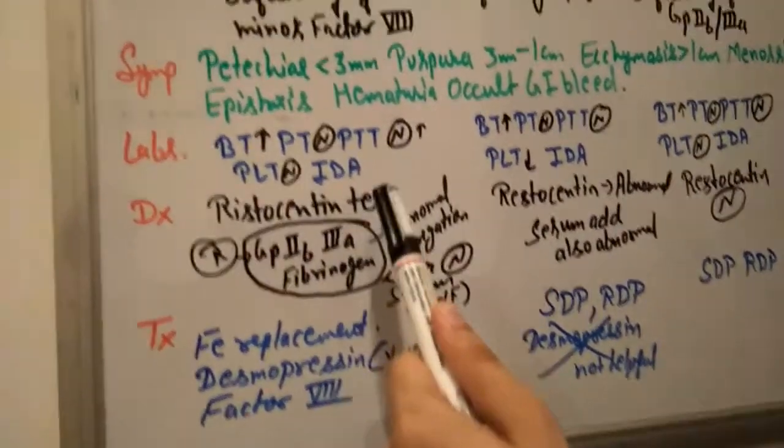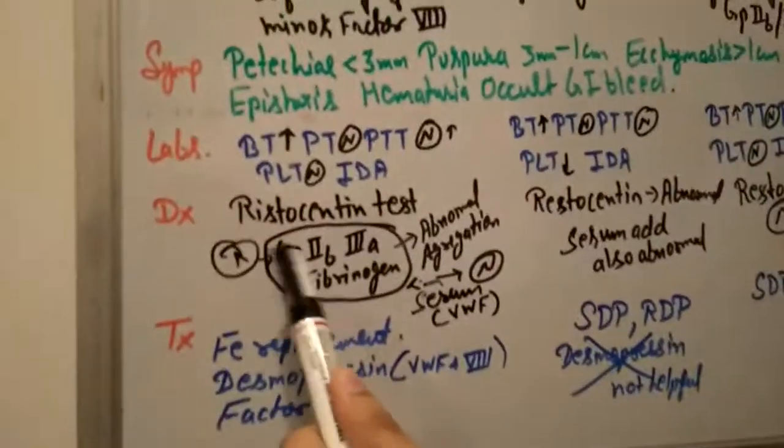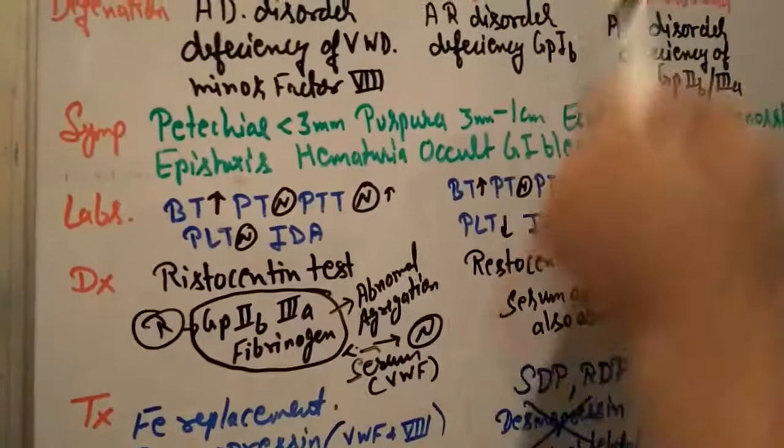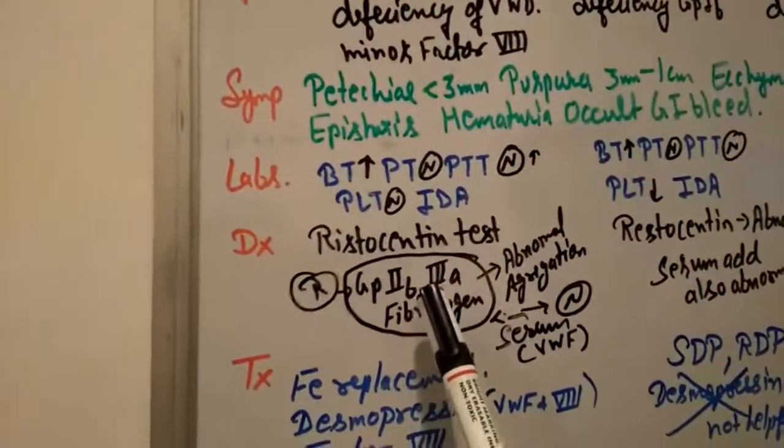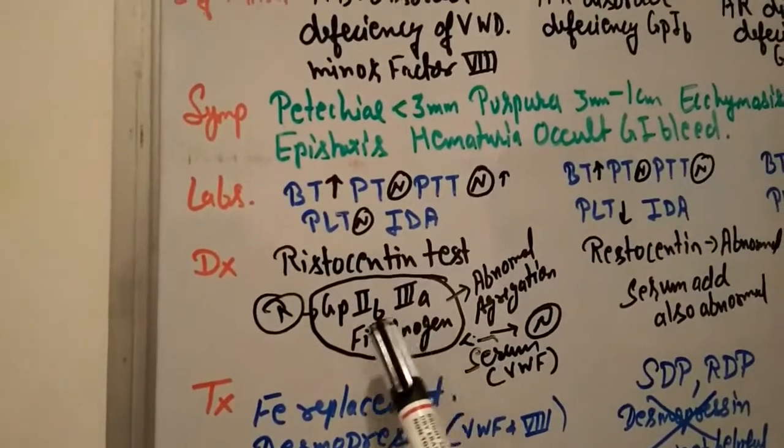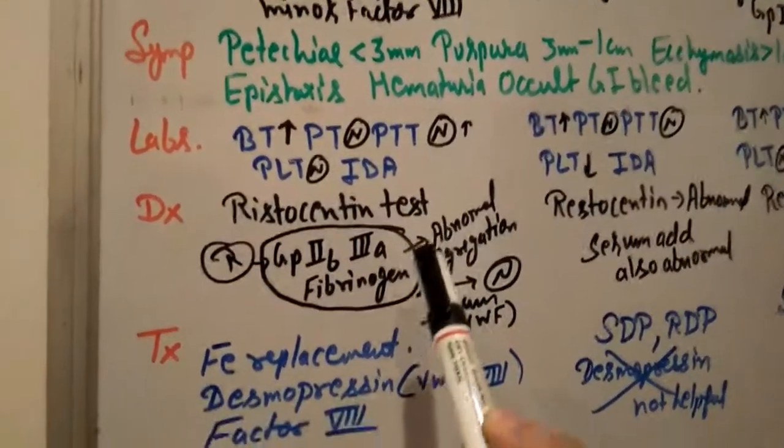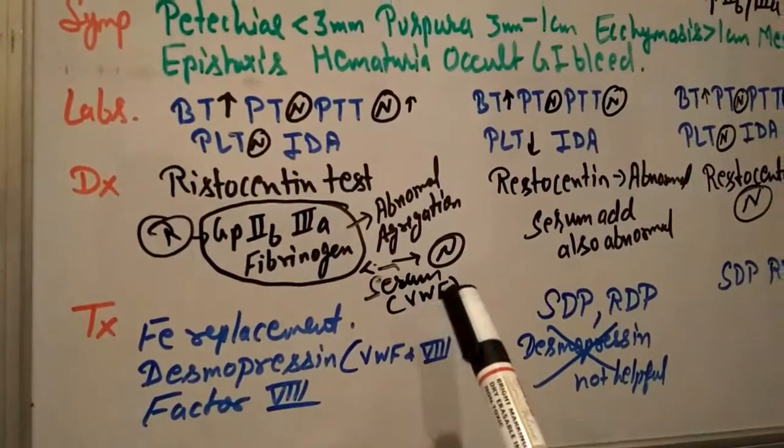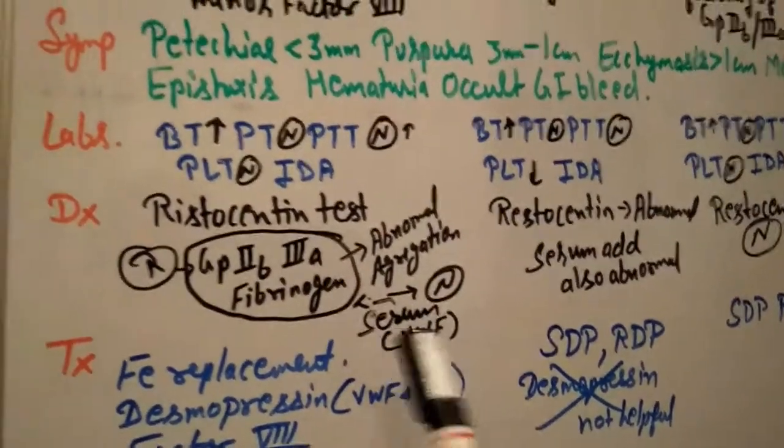How to diagnose? We can do the ristocetin test to diagnose von Willebrand disease. Ristocetin induces glycoprotein 2B and 3A with fibrinogen. When we add this to von Willebrand disease blood, there is no aggregation because of von Willebrand factor deficiency. If we add serum with the ristocetin test, it comes normal because serum contains von Willebrand factor.